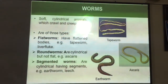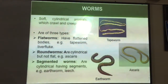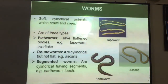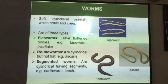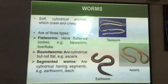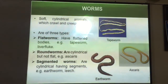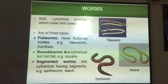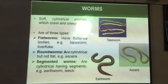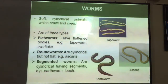Worms are also invertebrates, meaning they do not have a backbone. These are soft and cylindrical, and they crawl or creep. Examples are tapeworm, earthworm, and ascaris. Worms can be of three types: flatworms, roundworms, and segmented worms. Flatworms have a flat body — example: tapeworm. Roundworms have a cylindrical body — example: ascaris. Segmented worms have a body divided into different segments — examples: earthworm and leech.